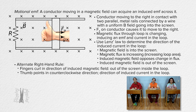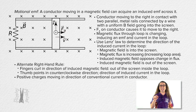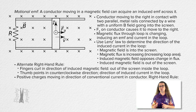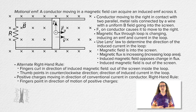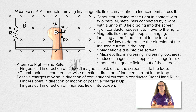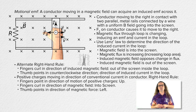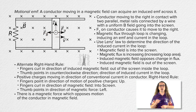There is an induced current in the loop, which is up through the moving conductor. Notice this means that because positive charges are moving in the direction of conventional current in the conductor, we can use the right-hand rule to show that the fingers point in the direction of the motion of the positive charges, which is up. Fingers curl in the direction of the magnetic field, which is into the screen. And our thumb points in the direction of the magnetic force on the moving positive charges, which is to the left. In other words, there is a magnetic force which opposes the motion of the conductor in the magnetic field.